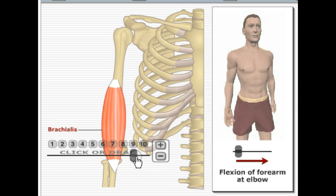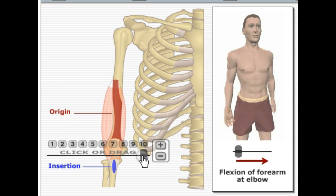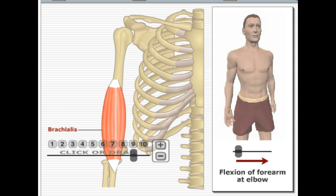Here we have the brachialis muscle. It's going to originate on the humerus and insert on the coronoid process of the ulna. Its primary function is flexion of a pronated forearm.